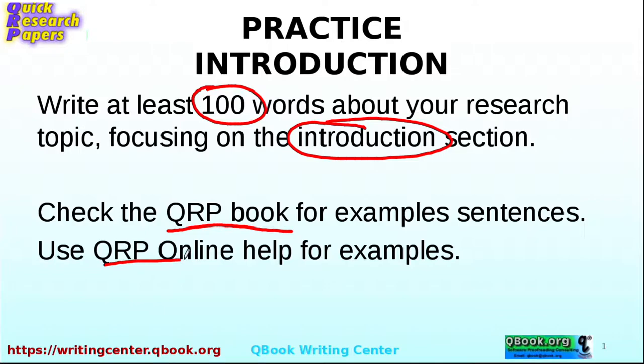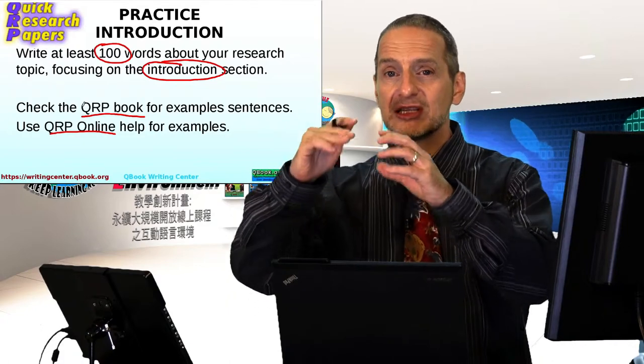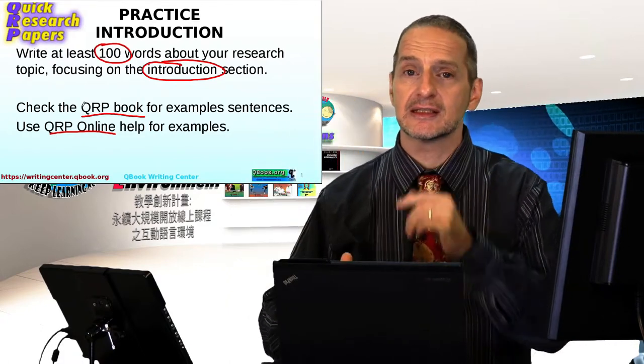And also, QRP online, when you're using it, has that little yellow help box right next to where you're writing. You can click there and get a bunch of example sentences.